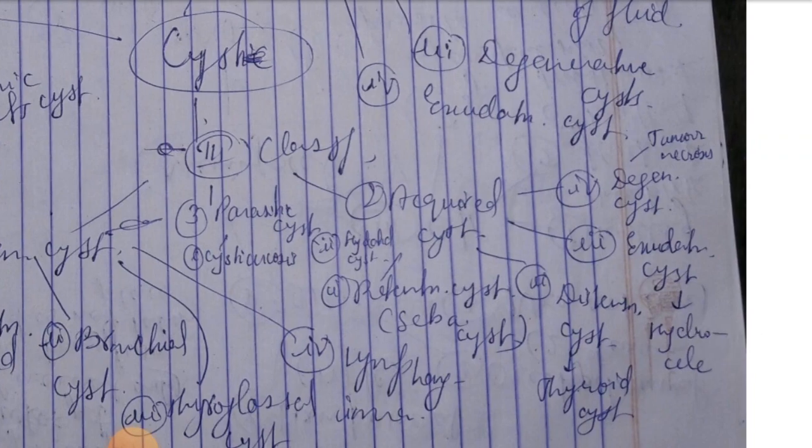There is sebaceous cysts. Second, dislocation cysts, third cysts, distension cysts. Then third, exudation cysts: hydrocele.